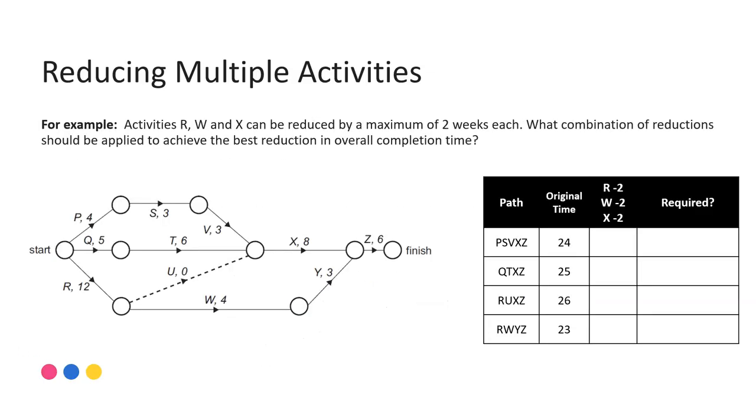So here we have that same network but activities R, W and X can all be reduced by a maximum of two weeks each. What combination of reductions should be applied to achieve the best overall completion time? This is where we're trying to do the best thing and we can look at a combination of reductions.